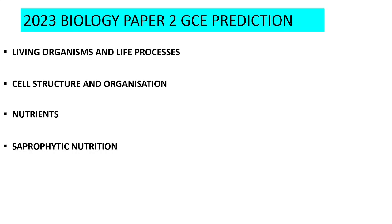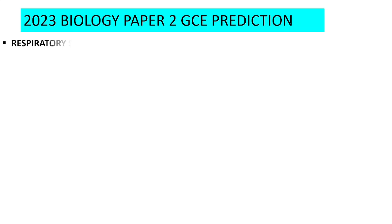Saprophytic Nutrition has come up about three or four times from 2015 to 2022, so this year it has a high probability of appearing. These are just topic names — under them there are subtopics, and you need a course outline for full details. Nutrition in Animals also appears to be a topic that doesn't miss in the Examination Council of Zambia Biology Paper 2.